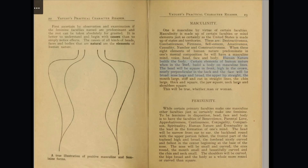Human nature builds the body. Certain elements of human nature, when in the lead, build a body on masculine lines. The head will be square in front, high in the crown, nearly perpendicular in the back, and the face will be broad; nose large and broad; the upper lip straight; the mouth large, stiff, and cut in straight lines; the chin large, thick, and square; the jaw square; neck large and shoulders square. This will be true whether man or woman.